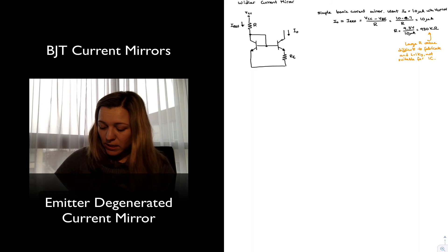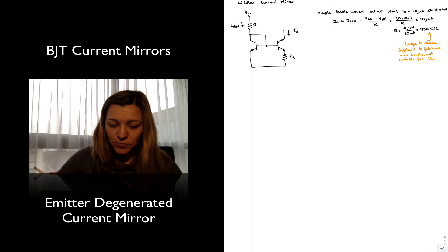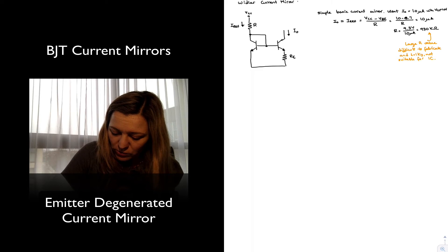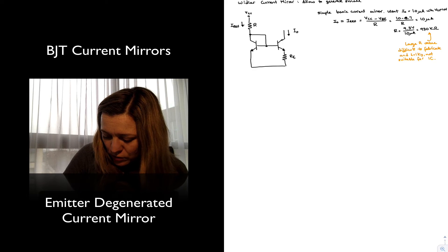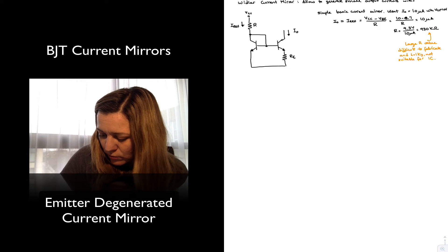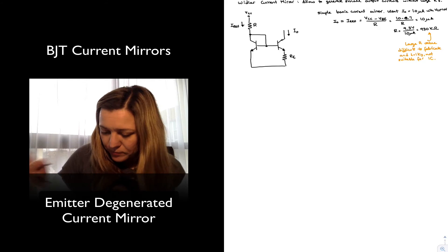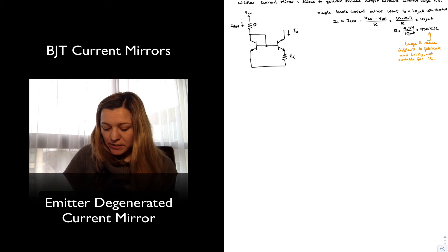And now let's take a look at how the Widlar current source will solve this limitation. The Widlar current mirror is going to allow us to generate small output currents without large resistors. Let's go ahead and get started on the analysis.